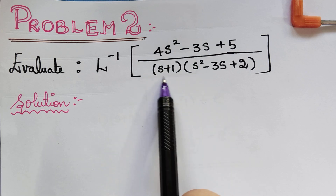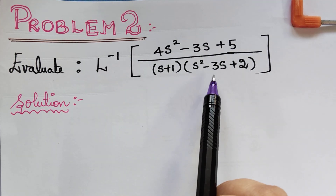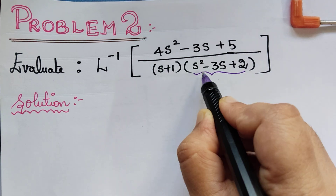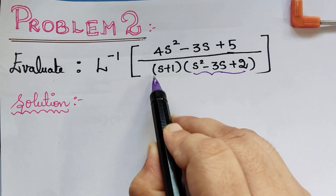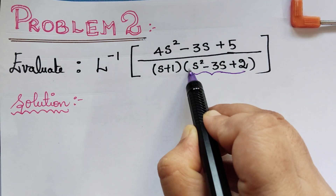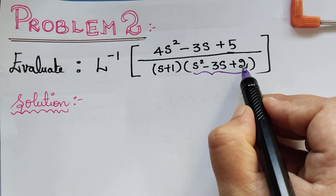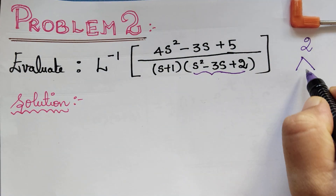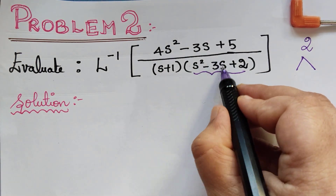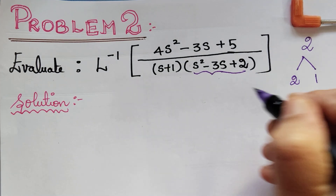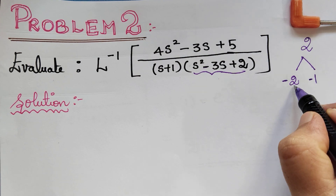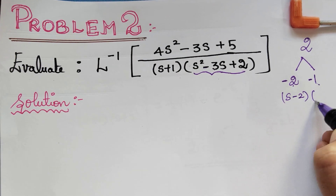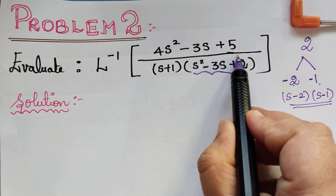We have to first simplify this term using partial fractions. We should check whether we are able to factorize the denominators. So s + 1 is already a factor. For s² - 3s + 2, the constant term is 2. Applying the Hill method: 2 multiplied with the coefficient of s² (which is 1) gives 2. We need factors of 2 that sum to -3, so we use -2 and -1. Therefore the factors are (s - 2) and (s - 1).